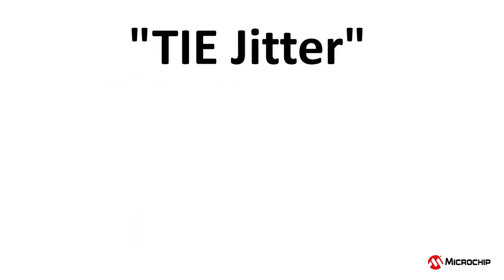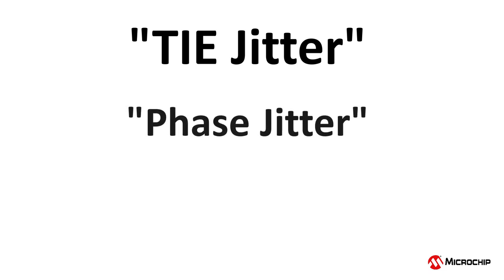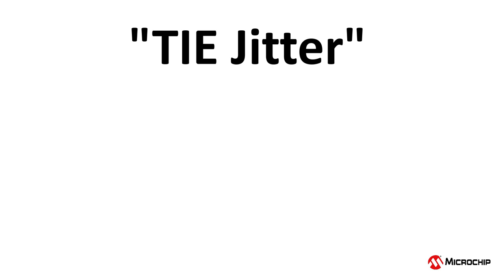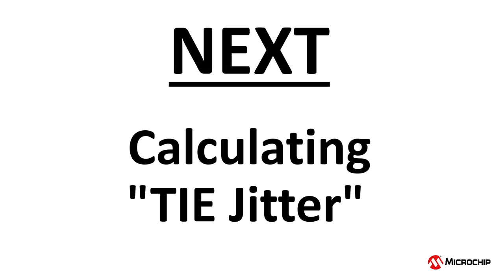One thing to keep in mind is that TIE jitter is also known as phase jitter and is often simply referred to as jitter in data sheets. This can be a little confusing, as there are other types of jitter that I will be discussing in future videos. But for now, our focus will be on measuring and calculating this TIE jitter, or phase jitter, which is the topic of our next video. Thank you.